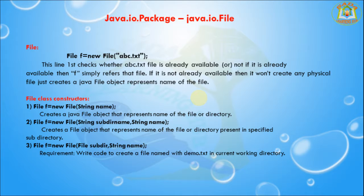Now I am going to discuss about the constructors in the File class. There are three constructors available: one default constructor and three parameterized (overloaded) constructors. The first is: File f = new File(String name) — it creates a File object that represents the name of the file or a directory. The second is: File f = new File(String subdirectoryName, String name) — it creates a File object representing the name of a file or directory present in a specified subdirectory.